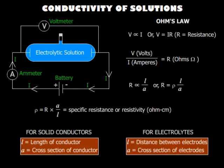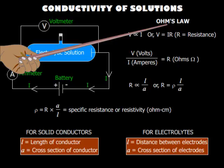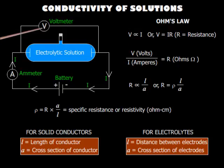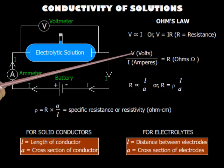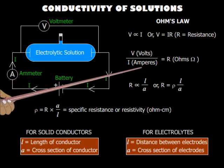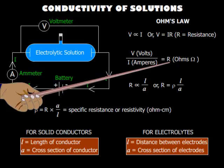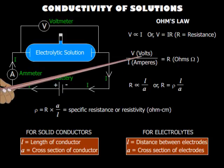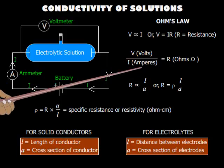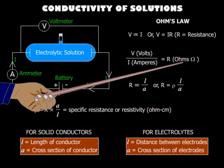Just as in solids, liquids also offer resistance to the flow of electric charge. Here also Ohm's law holds good, which states that the potential difference across the liquid is proportional to the current flowing. Therefore, the ratio of potential difference to current flowing is the constant of proportionality called the resistance. If potential difference is measured in volts and current in amperes, then resistance is in ohms.